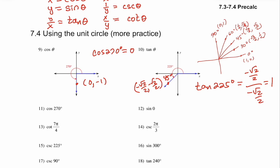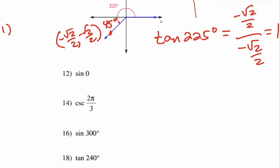Problem 11 asks for cosine of 270° again — that's a freebie, same as problem 9. For problem 12, sine of 0°: that point is (1, 0), and sine is the y-value, which is 0. These problems are super quick if you know your information. Draw that little picture each time so it gets cemented into your brain.